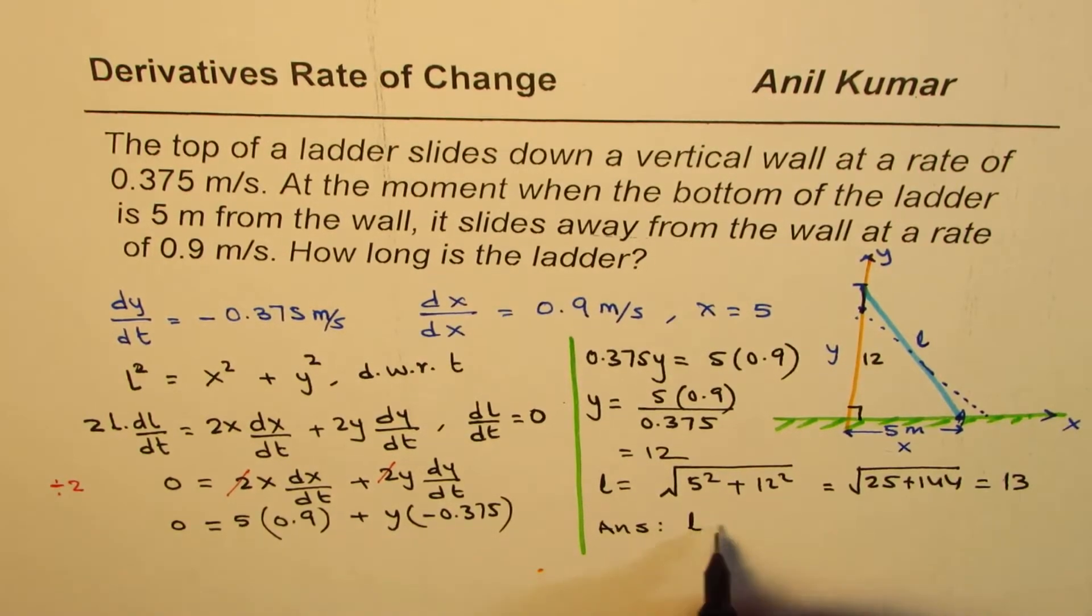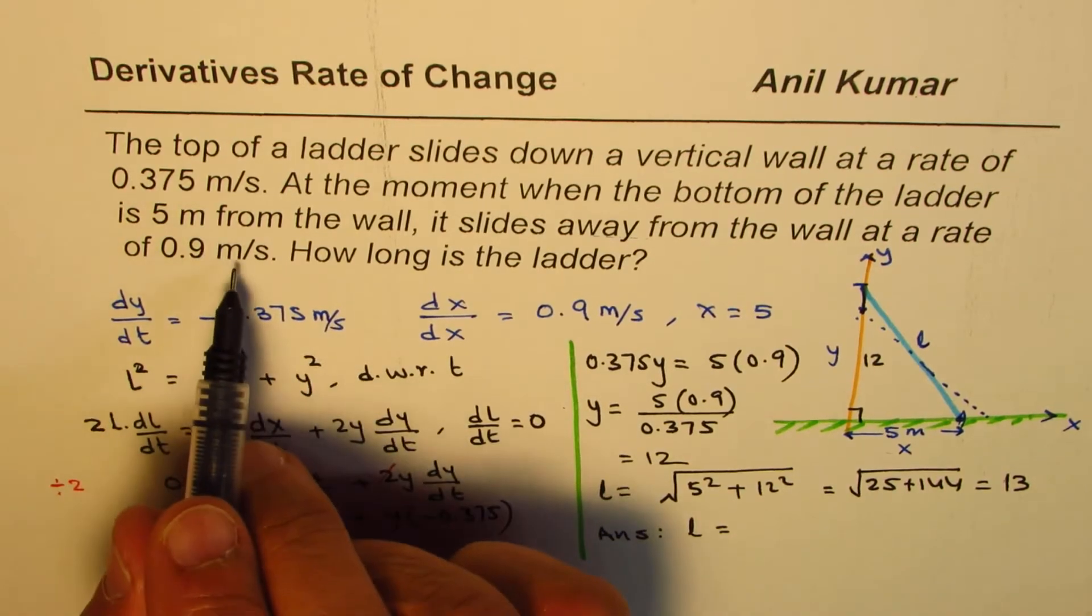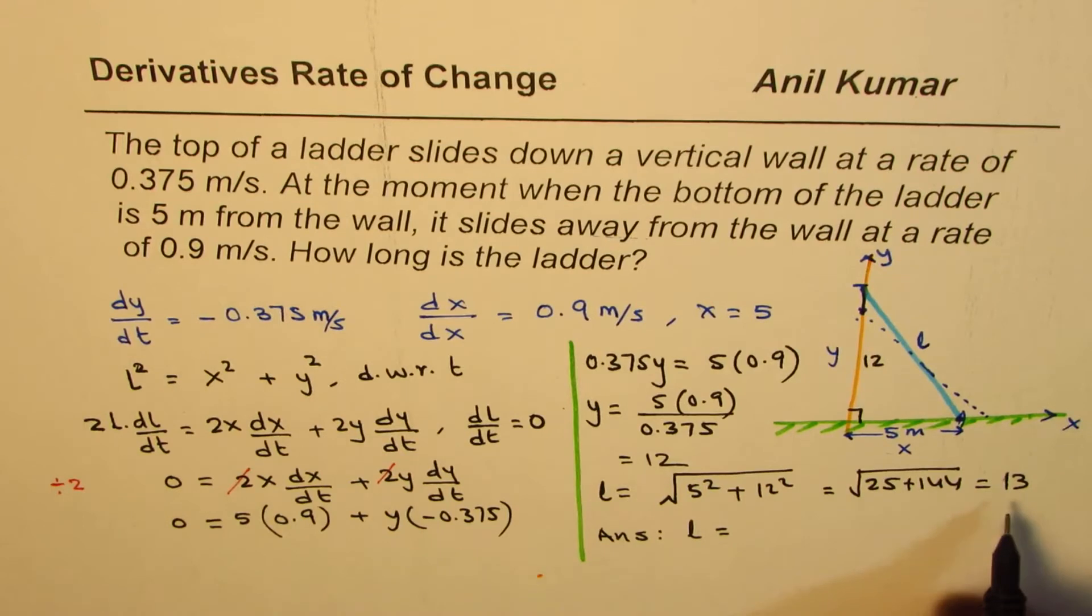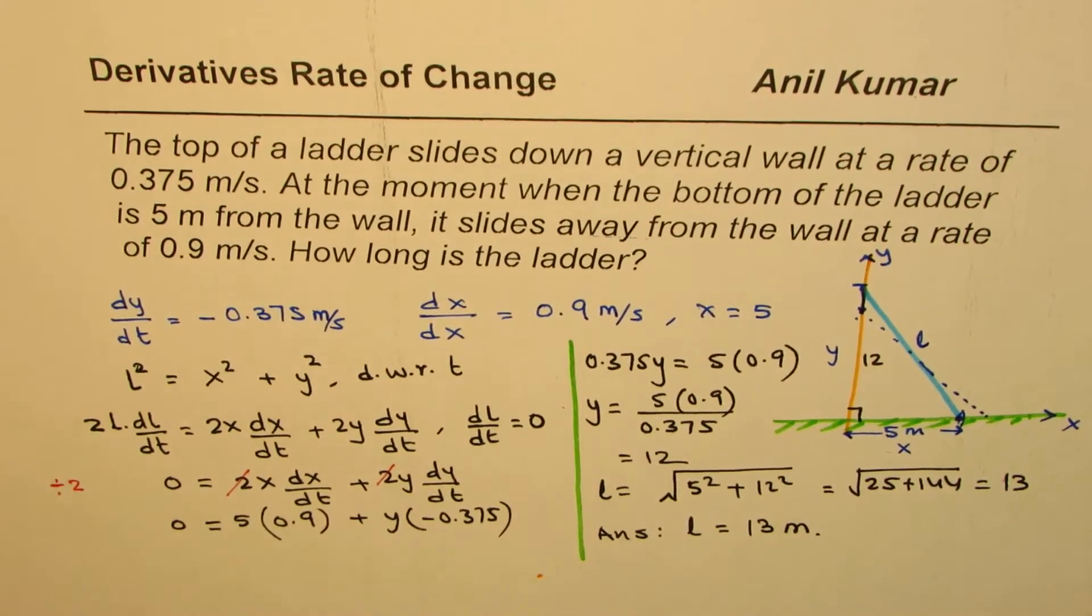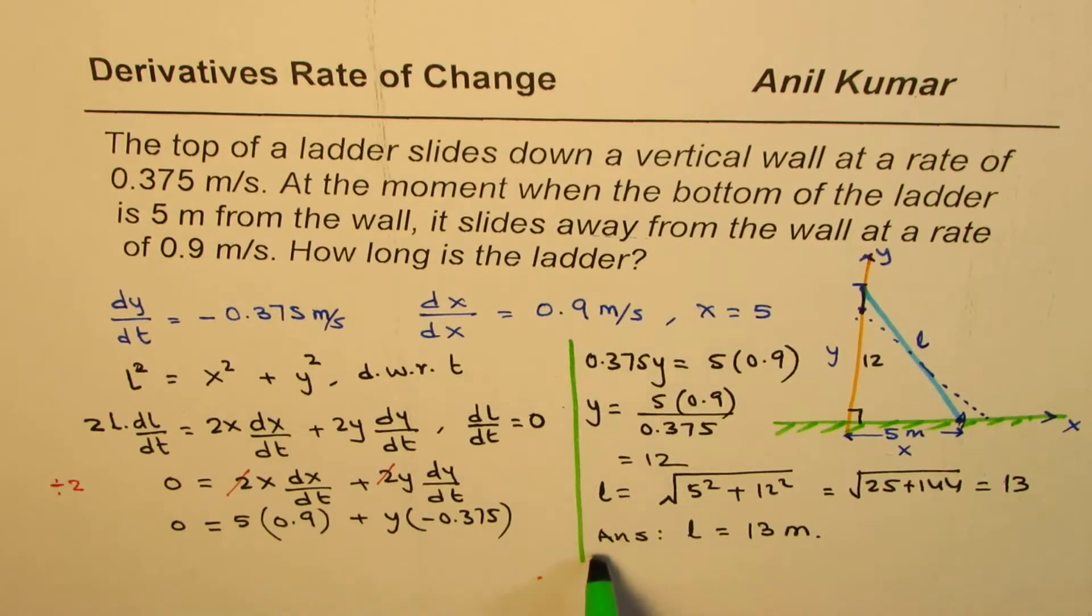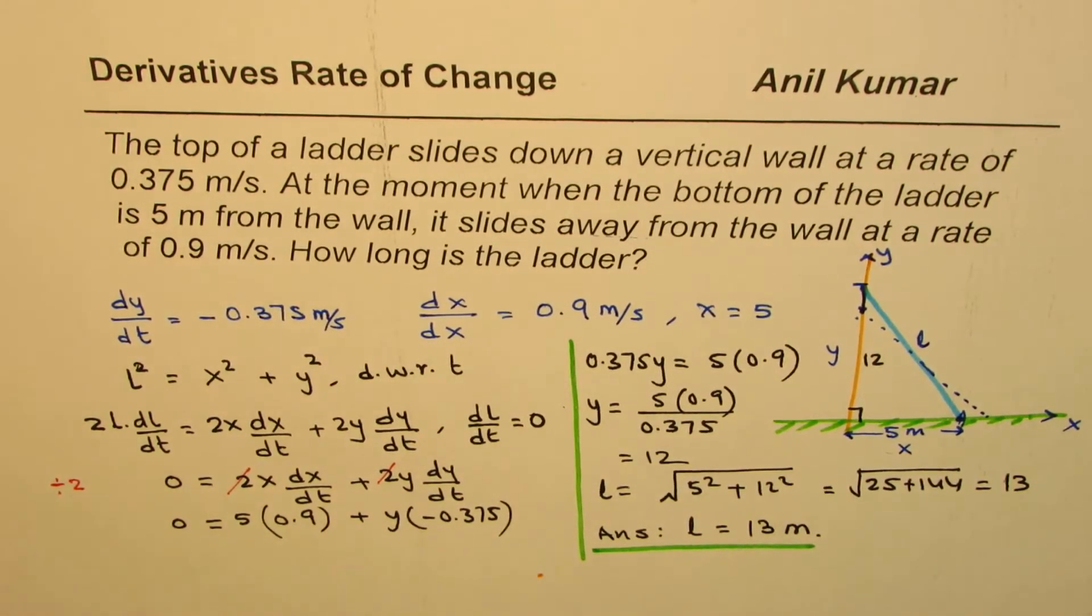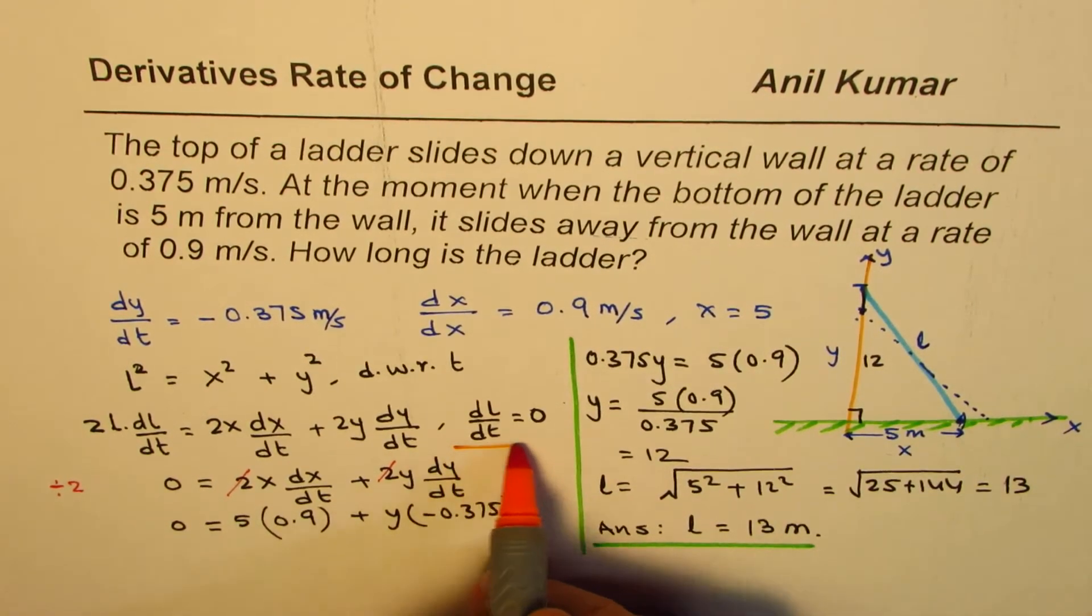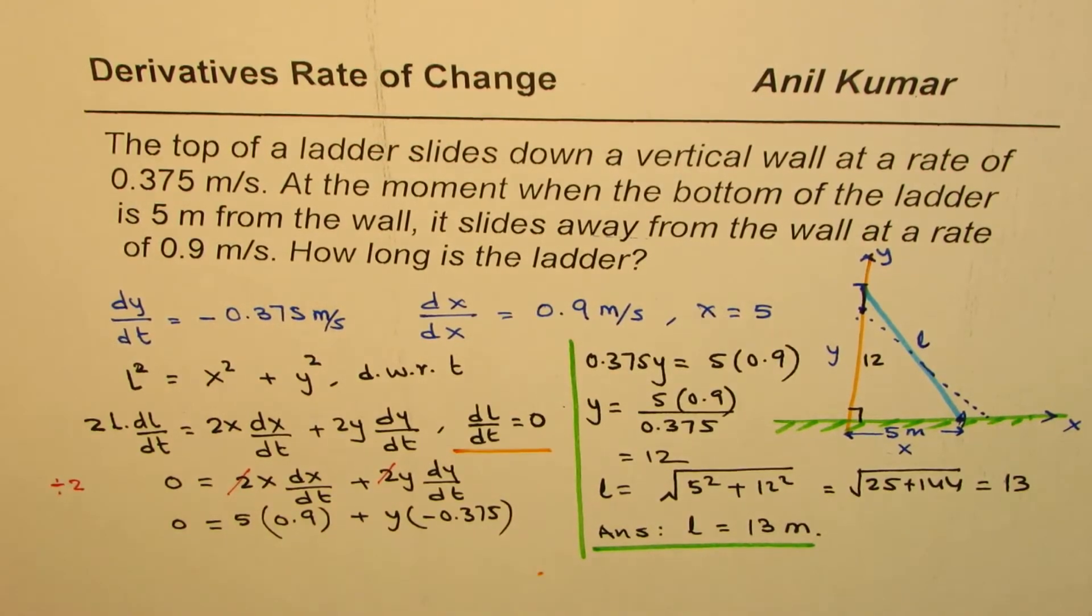So we get our answer as length of the ladder L equals, since all these units are in meters, we have length in meters which is 13 meters. So that becomes the solution. I hope the steps are absolutely clear. It's kind of important to understand that length will not change with time, so dL/dt is 0. That really helps us to simplify and find the solution.